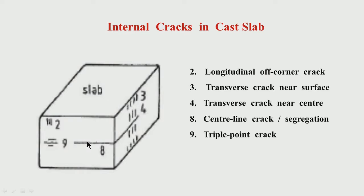Superheat plays a big role here. Superheat has to be low to avoid high intensity of crack and segregation formation at the centerline. We might also have what is called the triple point area. The triple point is where you have the center and a diagonal — when the diagonal meets the center, this is called the triple point.